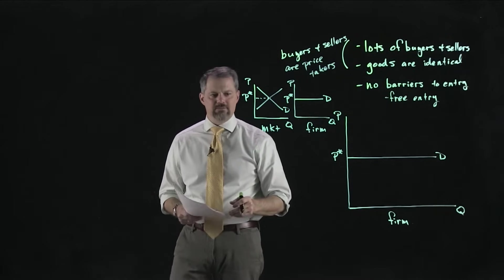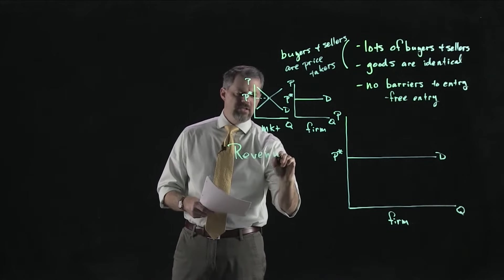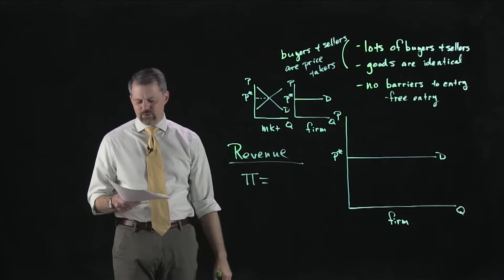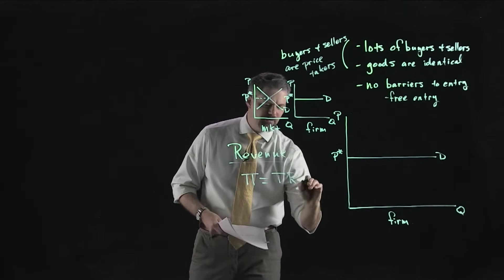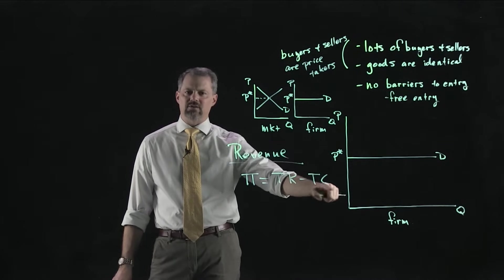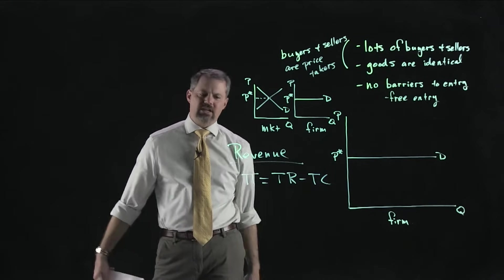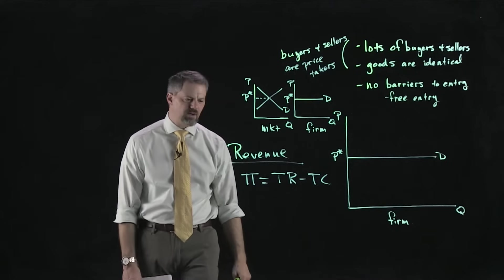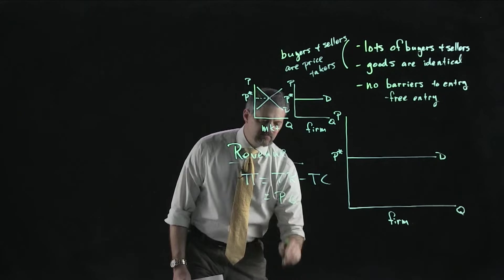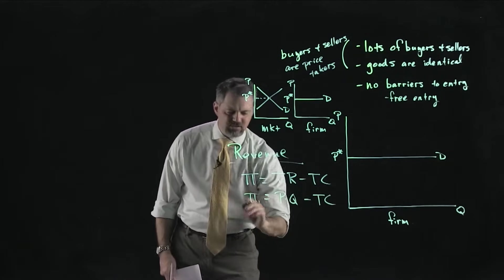Let's talk about the revenue of a competitive firm. We know that the profit of a firm equals total revenue minus total cost. We spent a previous video talking about how costs behave. Now we're going to think about how revenue behaves. Once we understand revenue, we can put those together and see how a firm maximizes profit.